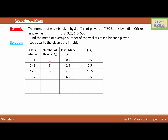Now I'm going to multiply the frequency by the class mark. So 1×0.5 = 0.5, 3×2.5 = 7.5, 3×4.5 = 13.5, and 1×6.5 = 6.5. I then count the total frequency: Σfi = 8, because the total number of players is 8. Adding all the fi×xi values gives Σfixi = 28.